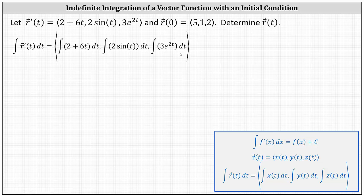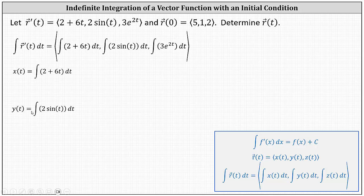If we let x of t, y of t, and z of t be the components of the vector-valued function r of t, we can say that x of t is equal to the integral of 2 plus 6t with respect to t, y of t is equal to the integral of 2 sine t with respect to t, and z of t equals the integral of 3 e to the 2t with respect to t.